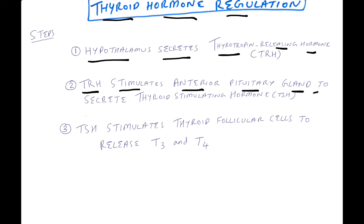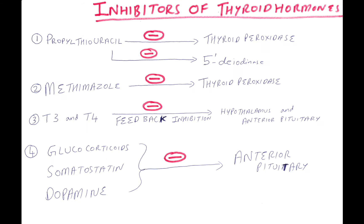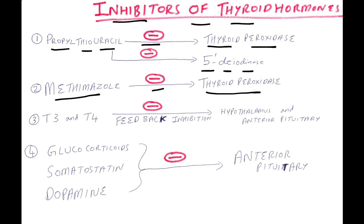Thyroid hormone regulation: The hypothalamus secretes thyrotropin-releasing hormone (TRH), which stimulates the anterior pituitary gland to secrete thyroid-stimulating hormone (TSH). TSH then stimulates thyroid follicular cells to release T3 and T4.